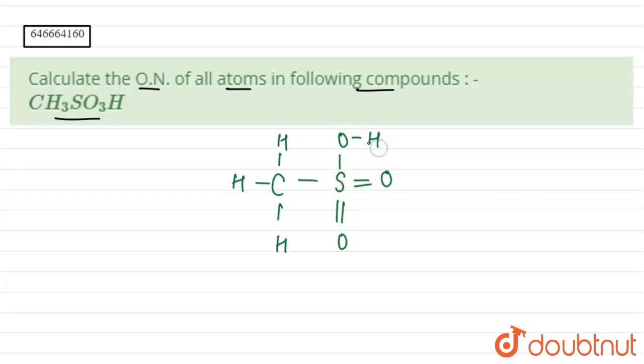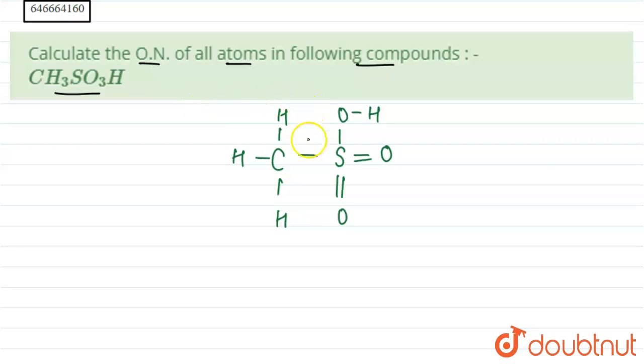one H attached. So this is methyl sulfonic acid. As we can see, first of all this is our methyl part and carbon exists here in minus four oxidation state. Some basic rules we should remember: when